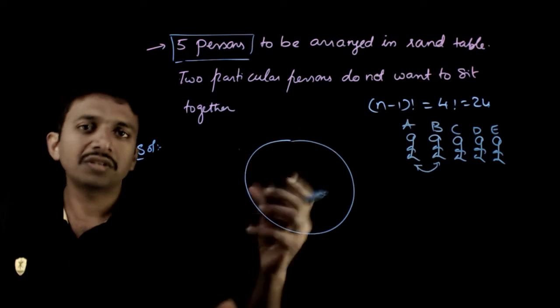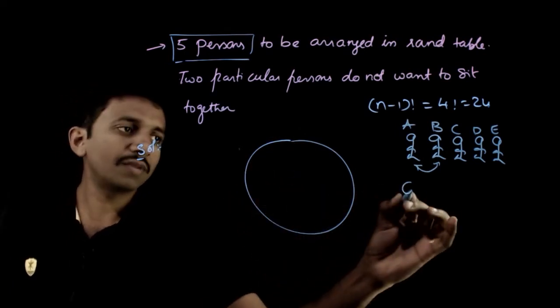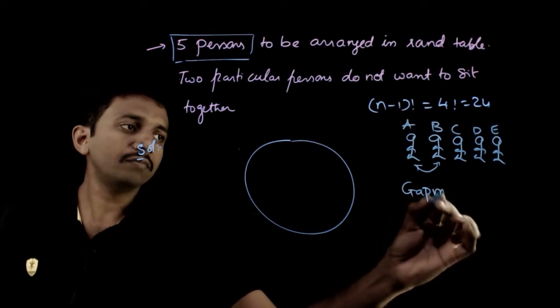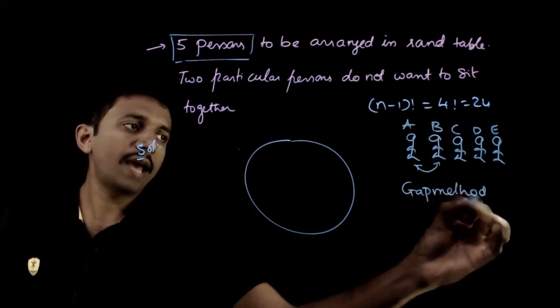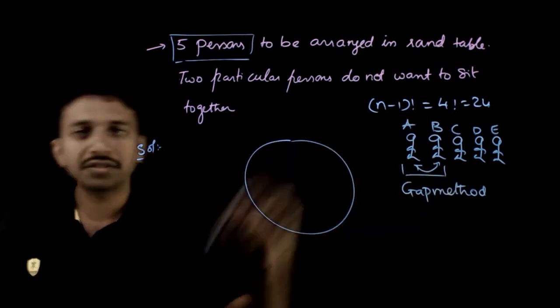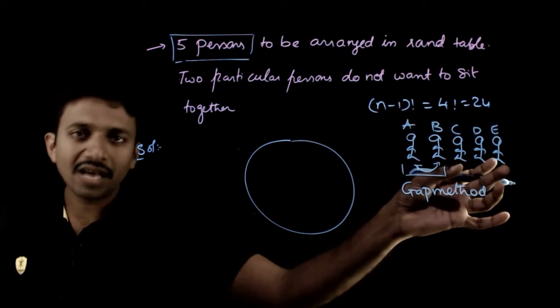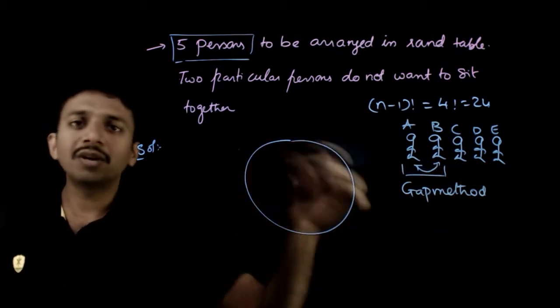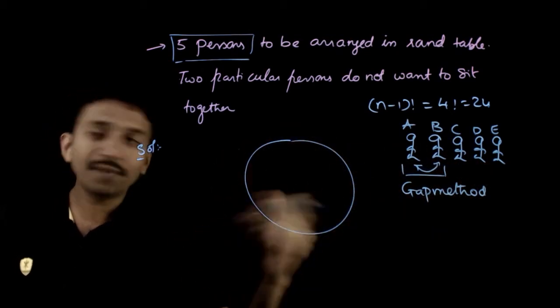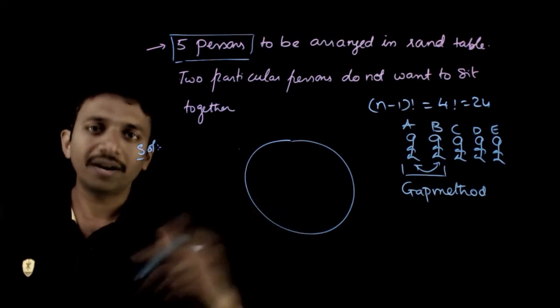Whenever two persons or some number of persons do not want to sit together, we have something called the gap method. In the gap method, we will first leave out these two persons. After that, take the other three persons and arrange them on a round table. So three persons can be arranged in a round table in how many ways? Two factorial ways.